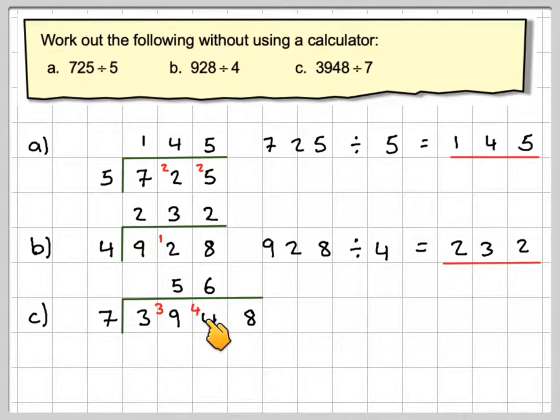And 6 7s are 42. So there will be 2 left over if we do 44 minus 42. And then 7s into 28 goes exactly 4 times. And therefore we've got 3948 divided by 7 is equal to 564.